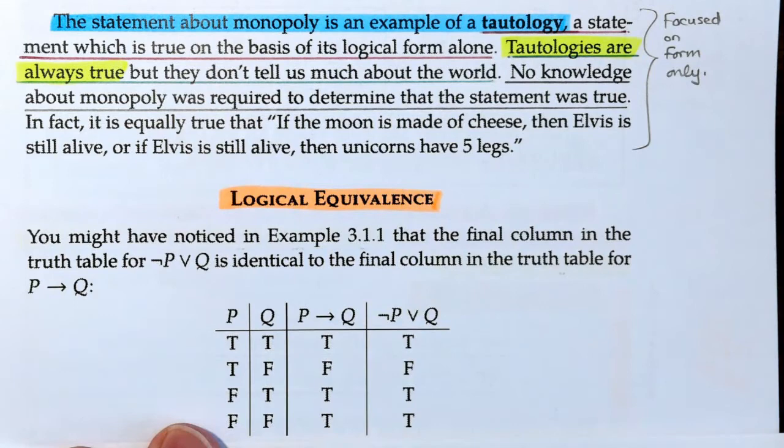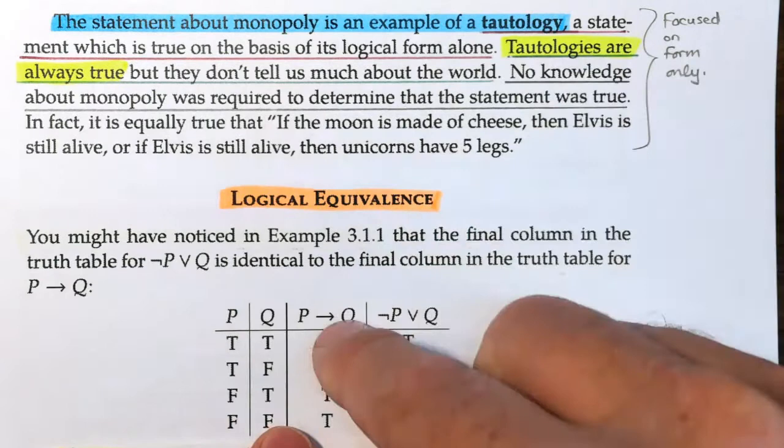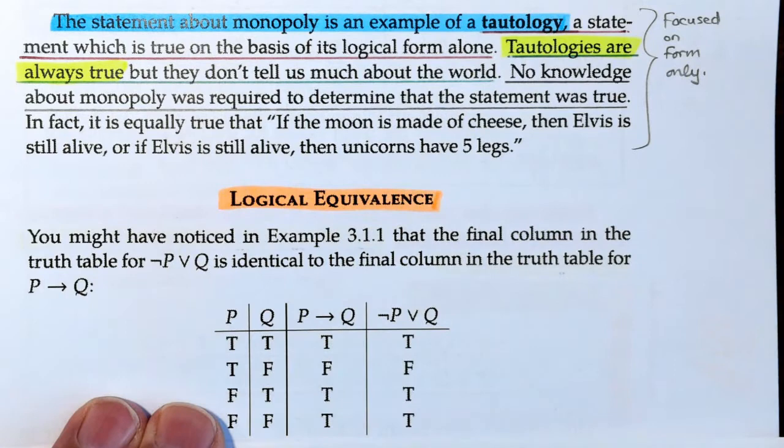Now just to remind yourself, this is what they look like. If P then Q is true where P is false, which is the last two over there, or where Q is true, which is in the first and the third, which makes the second row false.